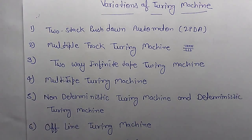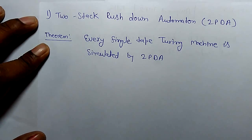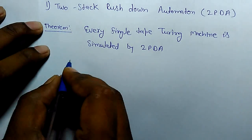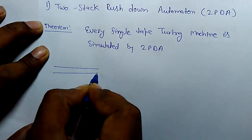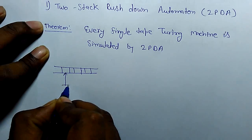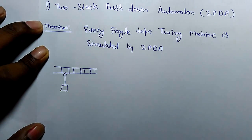Now I am going to show some equivalences — how exactly some of these machines are equivalent to our Turing machine. Let's take first the 2-stack pushdown automaton. Every single-tape Turing machine is simulated by a 2-PDA. To prove it: a Turing machine takes input from the input tape, updates it, and generates output on the same tape.